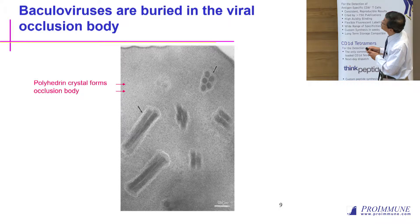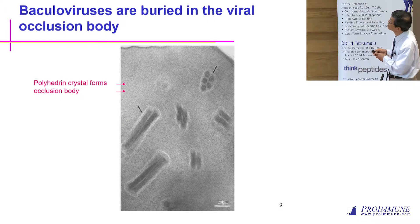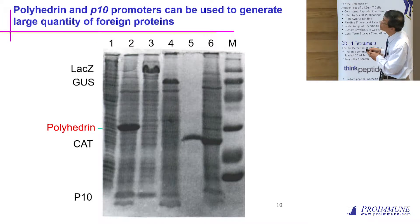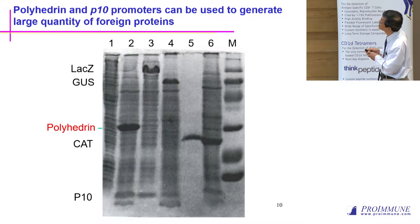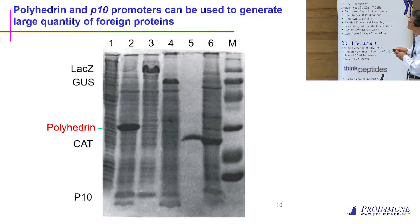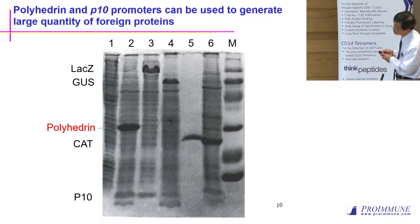If you subject an insect cell to gel electrophoresis, you will see a lot of bands. However, if the cell has been infected by baculovirus, you will see a major band called polyhedrin. You can then use this promoter to express other proteins, replacing the polyhedrin gene, allowing large-scale protein production.